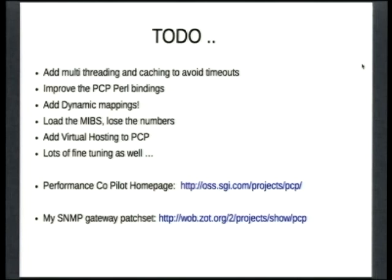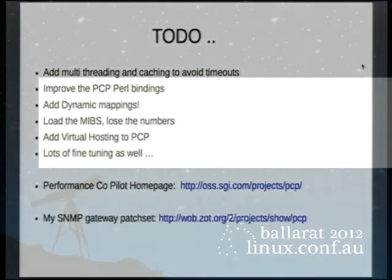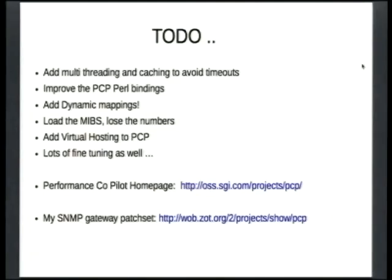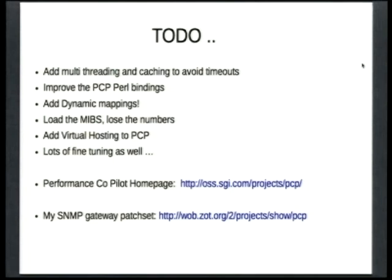There's a bunch of things that remain to do, primarily that dynamic mapping that I was talking about, which was limited by the fact that the Perl libraries I was using to interface with SNMP with the PCP didn't expose that functionality. So I need to go back, fix the Perl libraries first, and that in turn would then allow me to implement the dynamic mappings. Unfortunately, I was hoping to be able to say that it's available from the Performance Copilot homepage, but it's not. I've got a little project tracker up that has a reference to my Git repository with my changes in it. I'm in discussion with one of the maintainers to get it folded into the PCP repository, which hopefully will happen shortly.